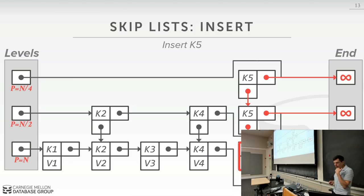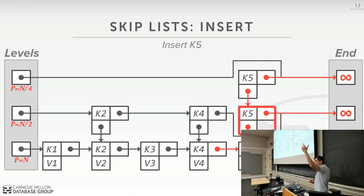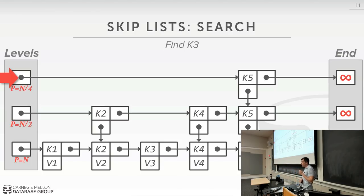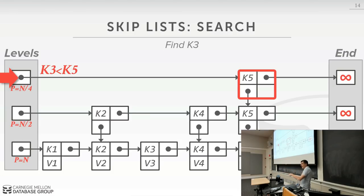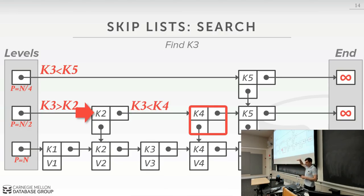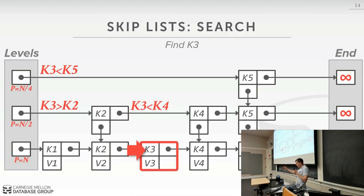To find key three: I know I have three levels, so I start at the highest level. The pointer ahead points to key five, which is greater than key three, so I can't continue at this level and go down. At the next level, key three is greater than key two so I jump ahead, but the next key is four which is greater than three, so I go down again. Then I scan across the leaf nodes until I find what I'm looking for. You step down levels and go as far as possible horizontally until you hit a boundary, then go down a level.